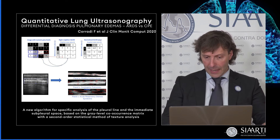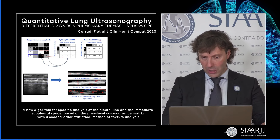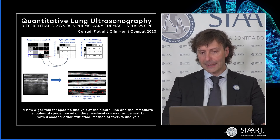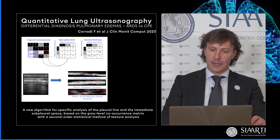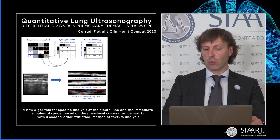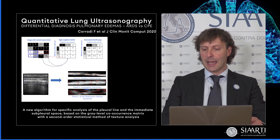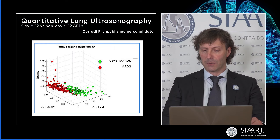Come vedete nel pannello B e nel pannello C al centro dello schermo, la tessitura dell'immagine è completamente diversa. E questo sembra essere vero anche per la capacità degli ultrasuoni, con metodiche algoritmiche, di differenziare l'ARDS da Covid-19 da altri tipi di ARDS, come ben rappresentato nei colori verde e rosso.